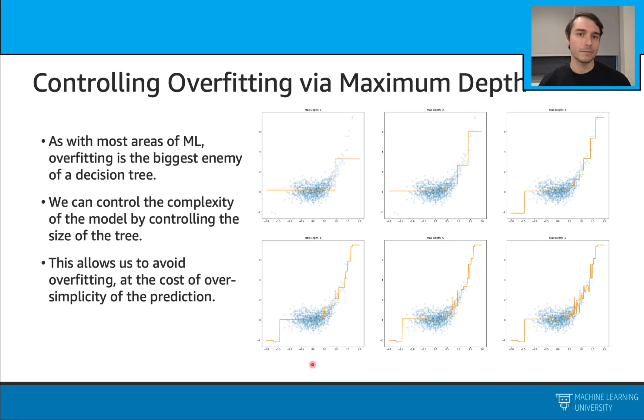Here are some visuals for that. As you see, as we keep increasing our maximum depth, our tree gets more complex, and it can overfit easier. This allowed us to avoid overfitting at the cost of over-simplicity of the prediction. Because as you see, these are really simple trees, and they are actually just a bunch of step functions.